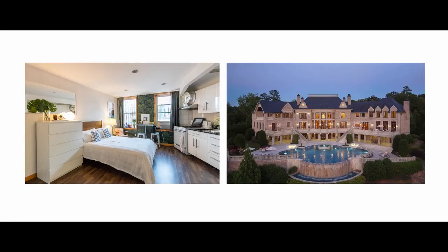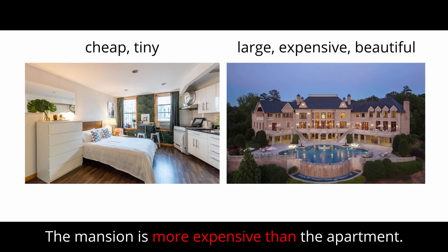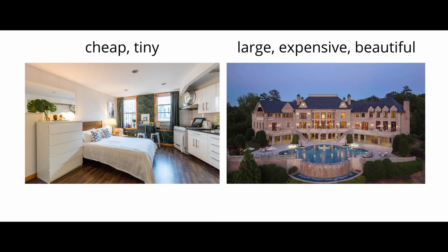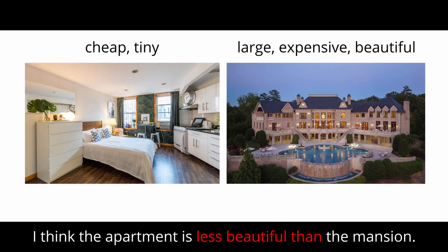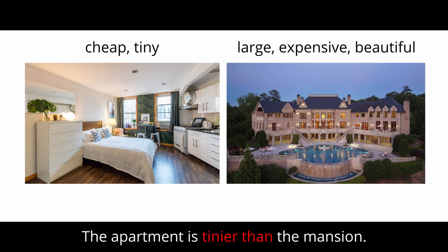Before we discuss this more, let's look at one more example. Here we have an apartment and a mansion. Let's describe each with some adjectives: cheap, tiny, large, expensive, beautiful. Let's compare. The mansion is more expensive than the apartment. I think the apartment is less beautiful than the mansion. The apartment is tinier than the mansion.